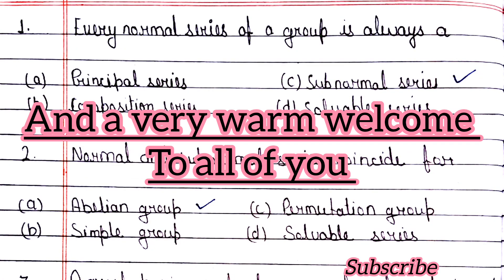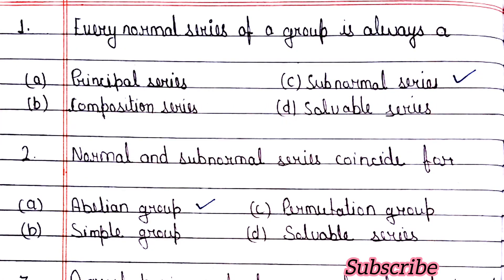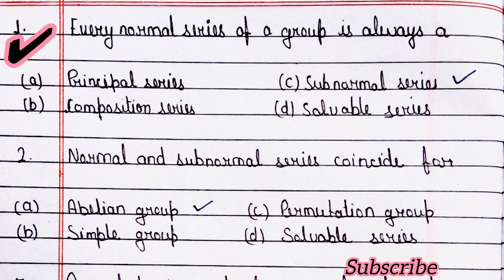Hello everyone, and a very warm welcome to all of you. Today we are going to discuss 80 plus MCQ questions of advanced algebra, BSc third year. Let's start without wasting your time. Question number one: every normal series of a group is always a subnormal series — option A is right.